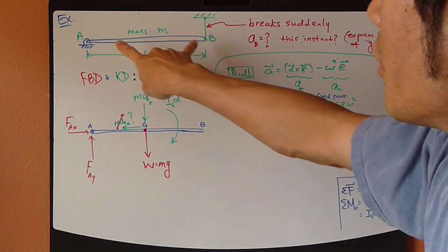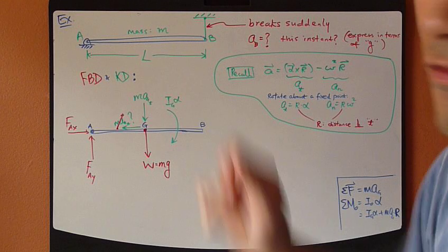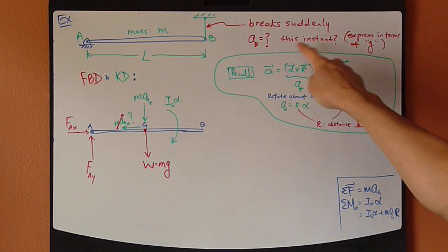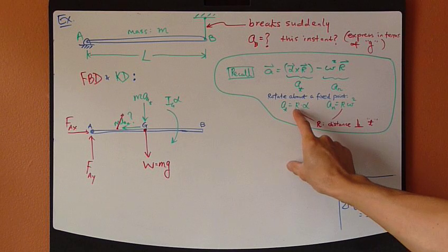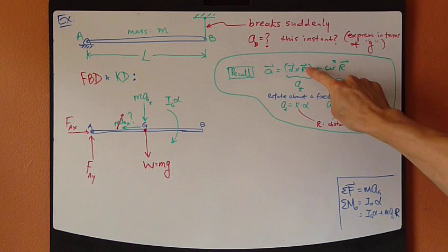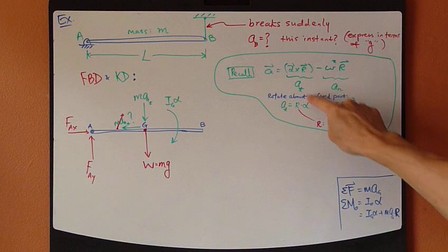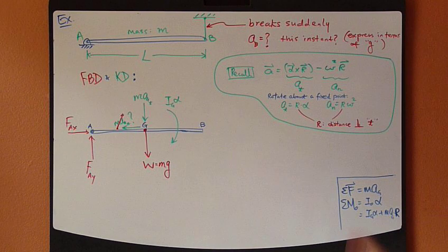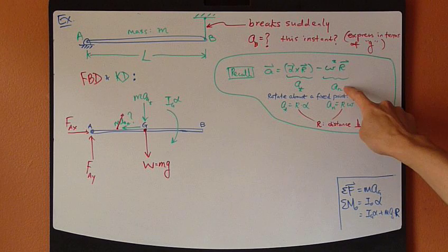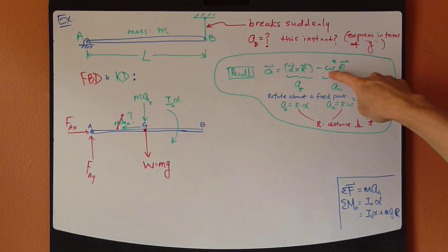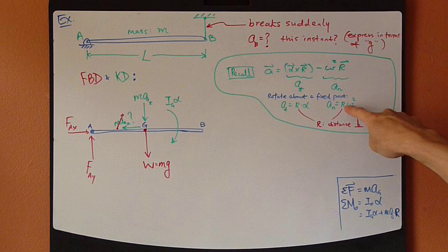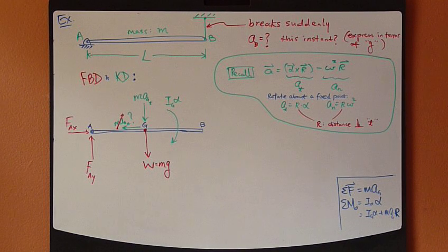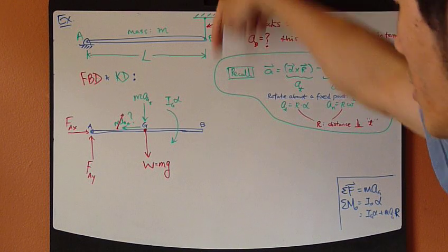Now, for a rigid body that's rotating about a fixed point, that's pure rotation, tangential component reduces down to r times alpha. It's just the magnitude of r times the magnitude of angular acceleration. And for normal component acceleration, it reduces to r omega squared, where r is distance perpendicular to the tangent direction.